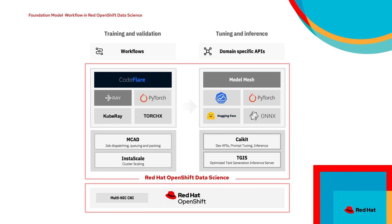How can we use OpenShift Data Science for foundational model work? OpenShift Data Science provides powerful tools based on various open-source components that allow you to train, tune, and deploy foundation models. On the right-hand side of the diagram, we have a stack dealing with tuning and inferencing. At the bottom of that layer, we have TGIS — Text Generation Inference Service — a specialized service runtime that allows you to deploy large language models.